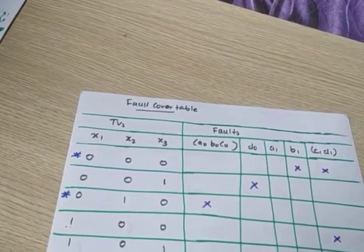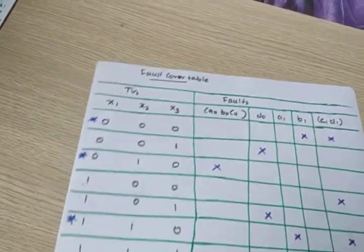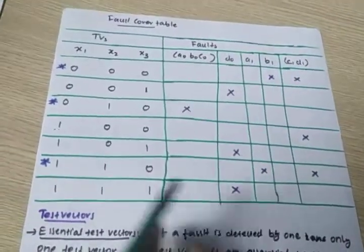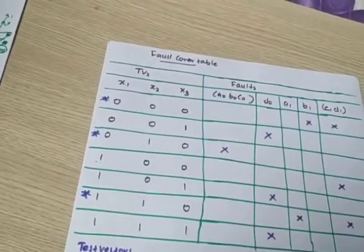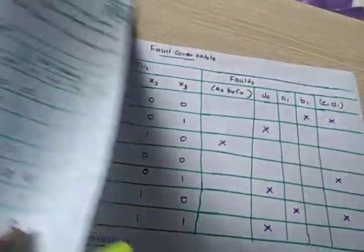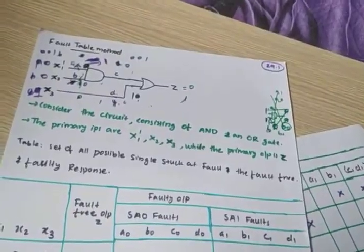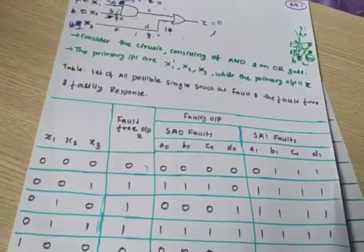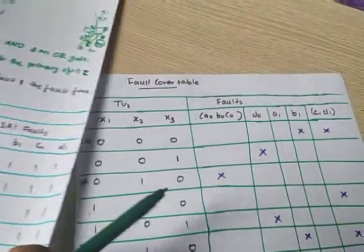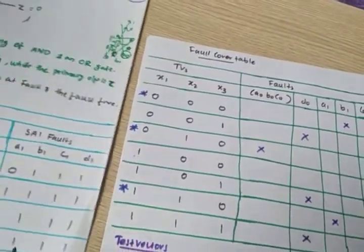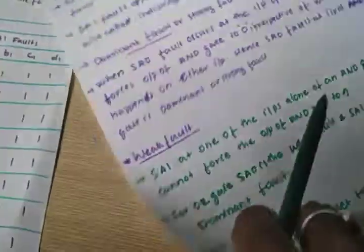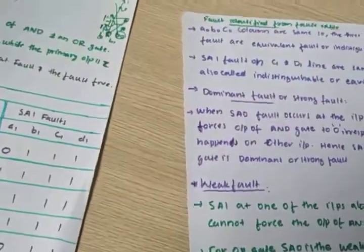Next is the Fault Cover Table. We already know the Fault Table method. Using the Fault Table, we need to find out the Fault Cover Table. We will check here how to draw the Fault Cover Table.